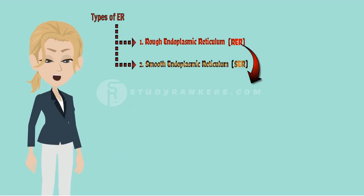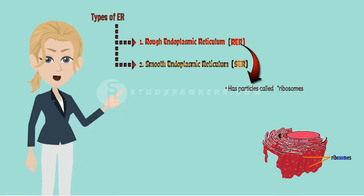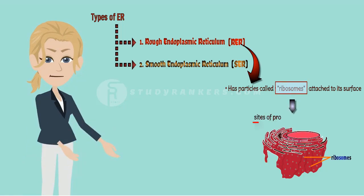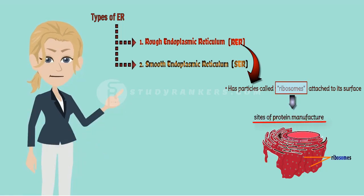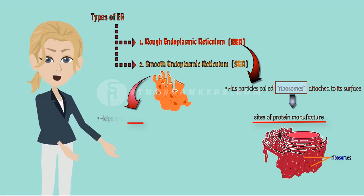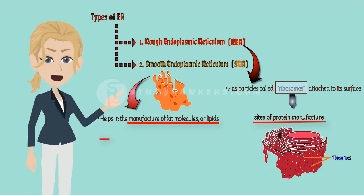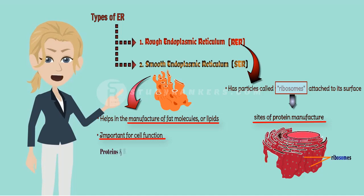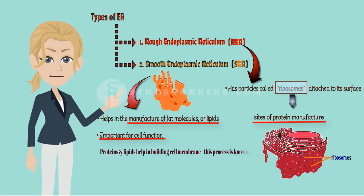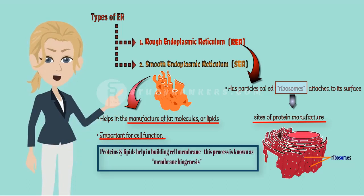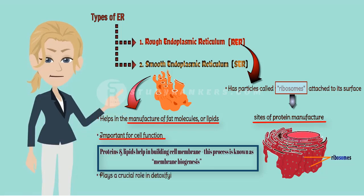Rough endoplasmic reticulum has particles called ribosomes attached to its surface. The ribosomes are the sites of protein manufacture. The smooth endoplasmic reticulum helps in the manufacture of fat molecules or lipids, important for cell function. Some of these proteins and lipids help in building the cell membrane.